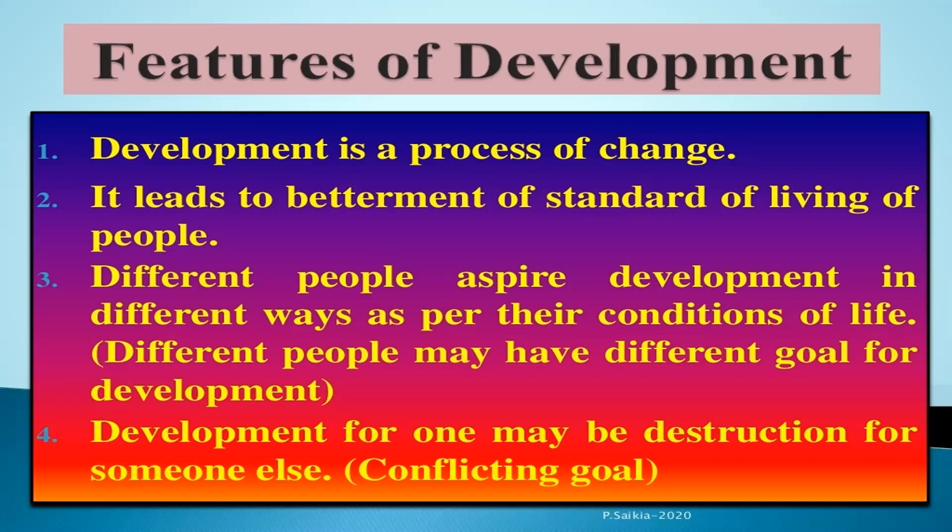Having filled most of Table 1.1, let us examine it. Do all these persons have the same notion of development or progress? Most likely not. Each of them seeks different things — different people aspire for different developmental goals. They seek things that are most important for them, that which can fulfill their aspirations or desires. In fact, at times two persons or groups of people may seek things which are conflicting.